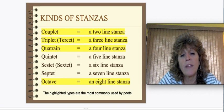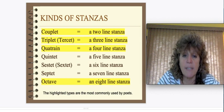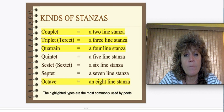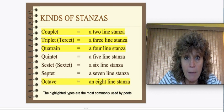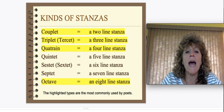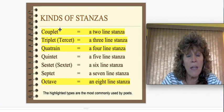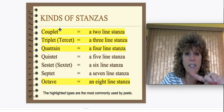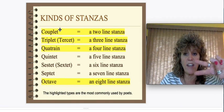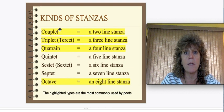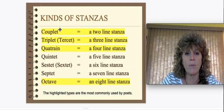Now, within the idea of stanzas, there are different groupings — different numbers of lines per stanza. For you math people, you'll like this. The most common is what's called the couplet — that's a poem with two-line stanzas, so every stanza has two lines all the way down the poem.